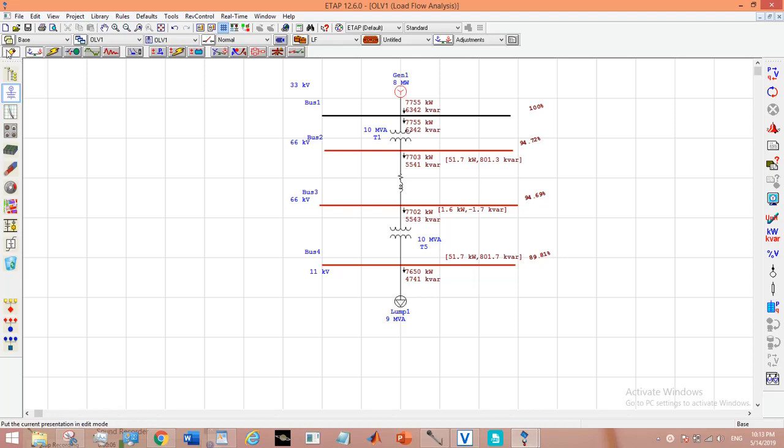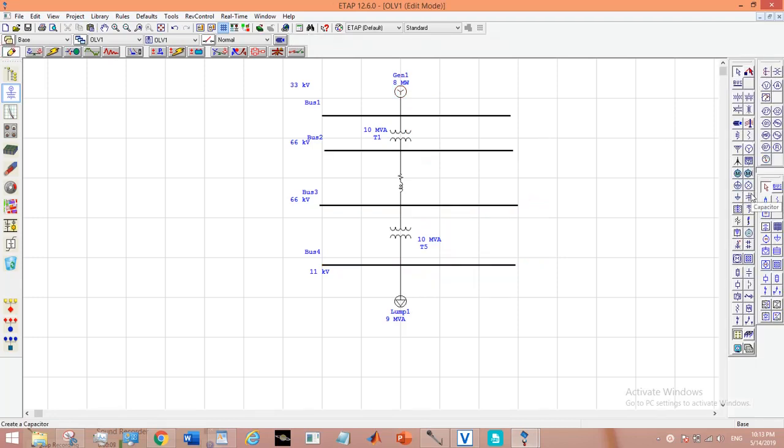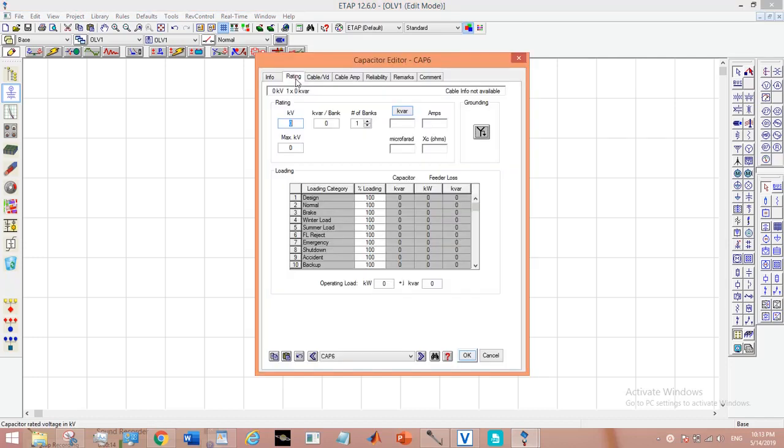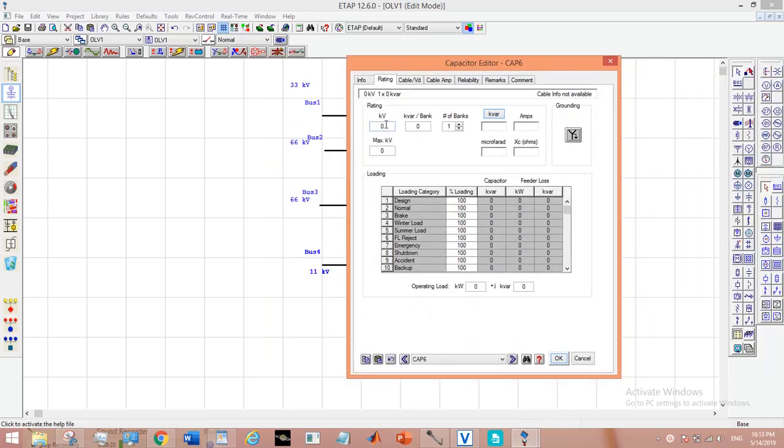Now, let's place the capacitor on bus 4. Its rating, 11 kV and 2246 kVAR. We actually won't find a capacitor bank of this rating. We will have to round off it to a certain value. But in ETAP we can enter this value.